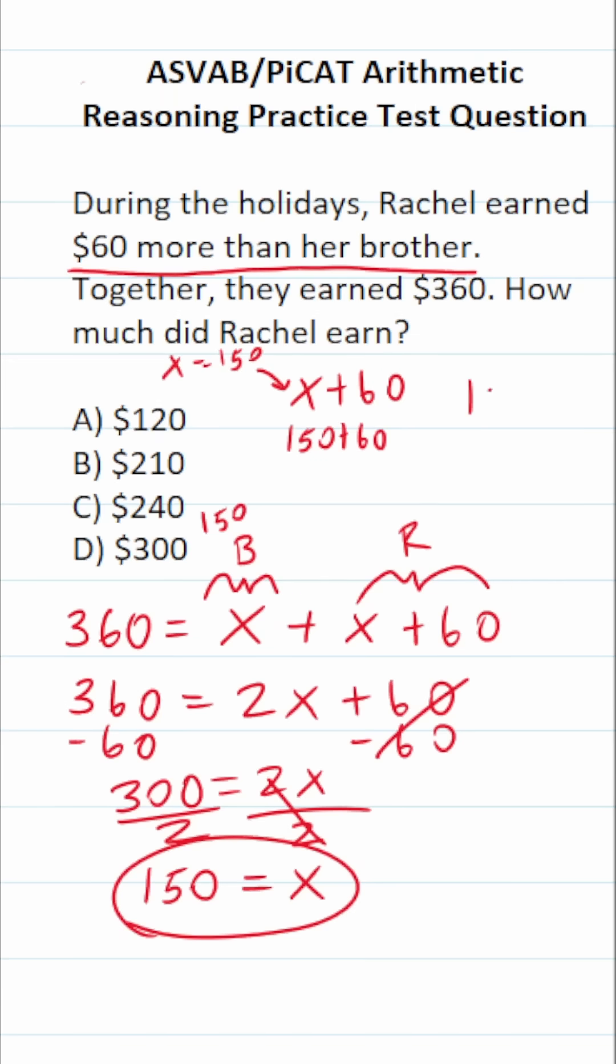And if you can't do this part mentally, you can always do it off to the side. 150 plus 60. 0 plus 0 is 0. 5 plus 6 is 11. Carry a 1. 1 plus 1 is 2. So Rachel earned $210. So this one is going to be B. Thank you.